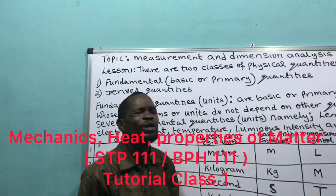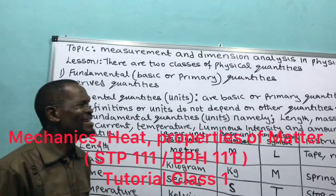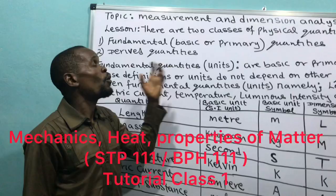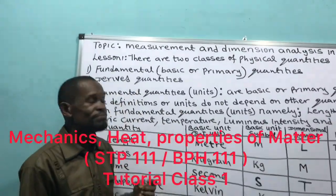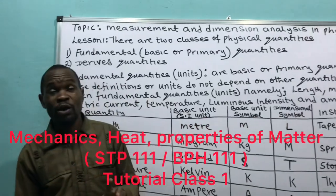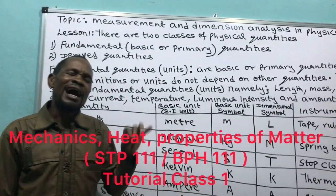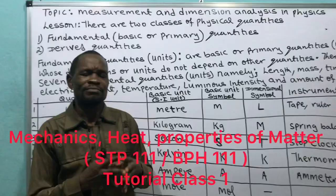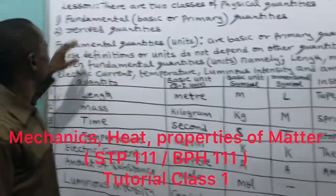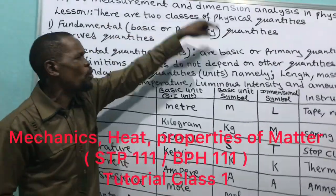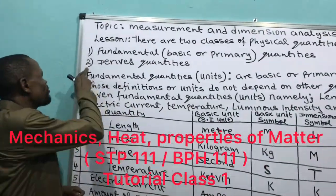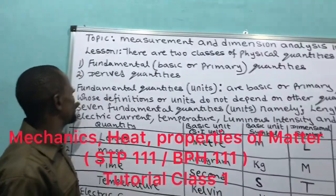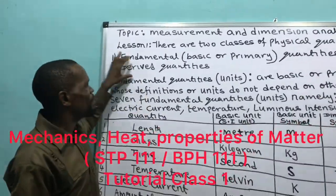There are two classes of physical quantity. Number one: fundamental quantity, which we also call basic or primary quantity — or fundamental units. I call this 'Adam.' Number two: derived quantity, which I call 'If.' I call fundamental quantity 'Adam,' and derived quantity 'If.'